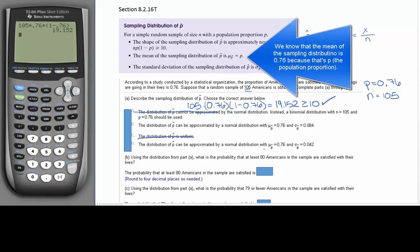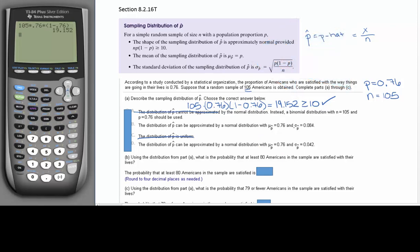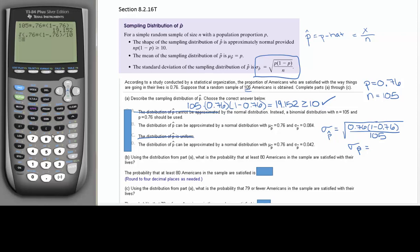And now, the difference between answers B and D is the standard deviation of the sampling distribution. Well, we can calculate that with this equation right here. So the standard deviation of the sampling distribution is going to be the square root of P, which is that 0.76 times 1 minus 0.76, all over N, and N was 105. That's going to give us 0.0417.